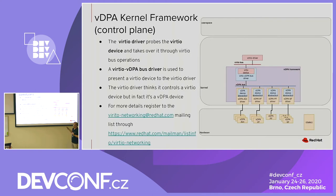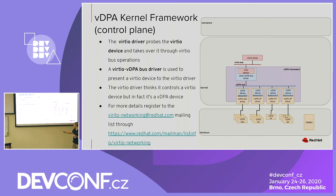The other path is the VirtIO driver path. This traditionally runs inside the guest; we're pushing it into the host kernel, building on existing VirtIO driver and VirtIO-pci components. We push in a VirtIO VDPA bus driver translation block, which gives the VirtIO driver the impression it's talking with a VirtIO device. So VirtIO driver talks with a VirtIO device — but in practice it's talking with a VDPA device. That's the magic of the framework.